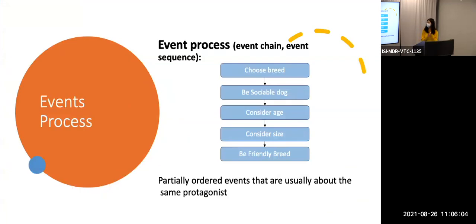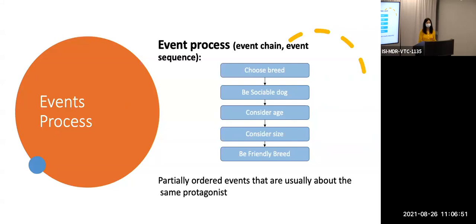We're going to introduce a concept called event process. An event process is partially ordered events that are usually about the same protagonist. For example, for choosing a second dog, we have a list of chains that together accomplish this goal. This sequence or chain may not be fully temporally ordered, but for some other cases it could be. For instance, if we are considering gaining a PhD, there are several steps: you have to finish your course requirement, pick a thesis, prepare for the defense, and complete your defense. These are event processes that help us achieve this kind of goal.